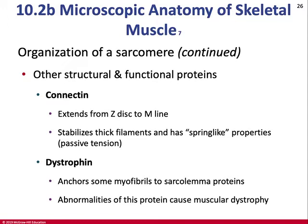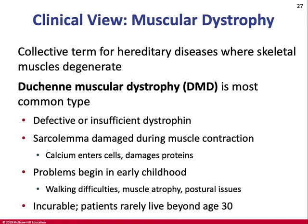Dystrophin anchors the myofibrils to the sarcolemma proteins. Abnormalities of dystrophin cause muscular dystrophy, which makes the connection between the myofibrils and the muscle cell membrane unstable. When the myofibrils shorten, they don't have anything to pull on, and over time the muscles will atrophy. This is a genetic disorder; the most severe form is on the X chromosome, called Duchenne muscular dystrophy. Without dystrophin, the sarcolemma is damaged during contraction, calcium enters the cells, and proteins get damaged, resulting in walking difficulties and muscular atrophy. Patients rarely live beyond age 30, as it eventually affects the diaphragm and can affect the heart.